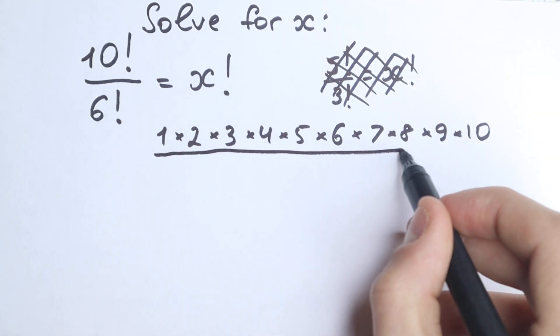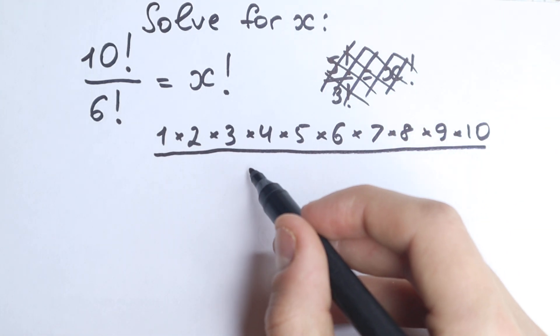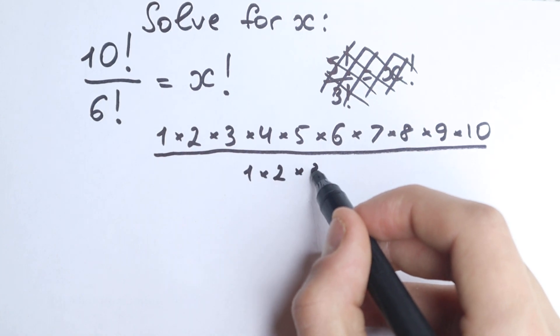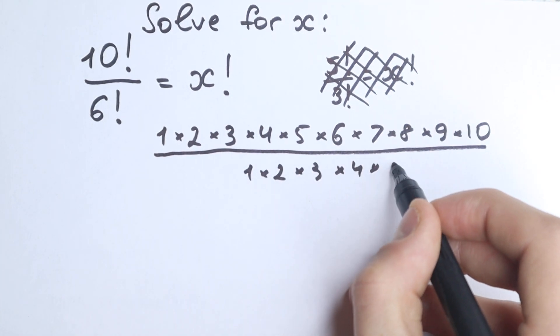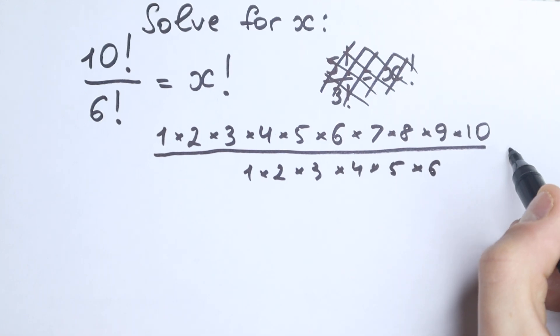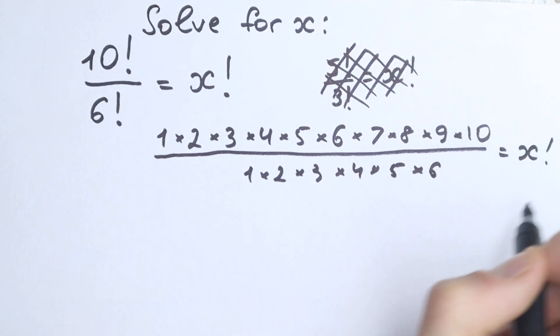And in our denominator we have 6 factorial, so 1 times 2, times 3, times 4, times 5, and times 6, okay, equal to x factorial.